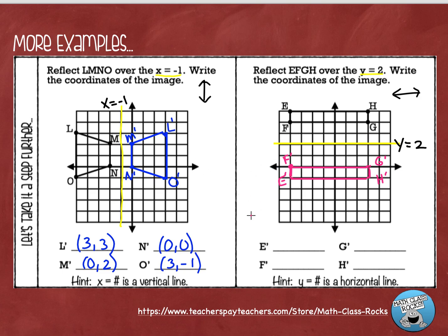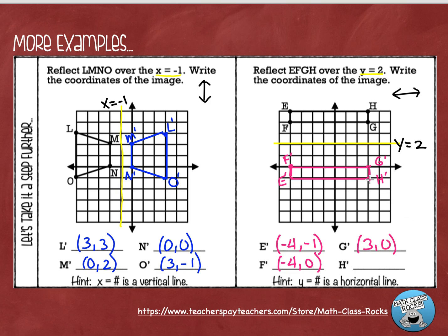Now let's write some ordered pairs. Point E prime — starting at the origin — is four to the left and down one, so negative four, negative one. Point F prime is right on the x-axis, four to the left: negative four, zero. Point G prime is on the x-axis, three to the right: positive three, zero. And point H prime is positive three, negative one. Also, remember that y equals lines are horizontal and x equals lines are vertical — label your lines on your notes so you can remember this.